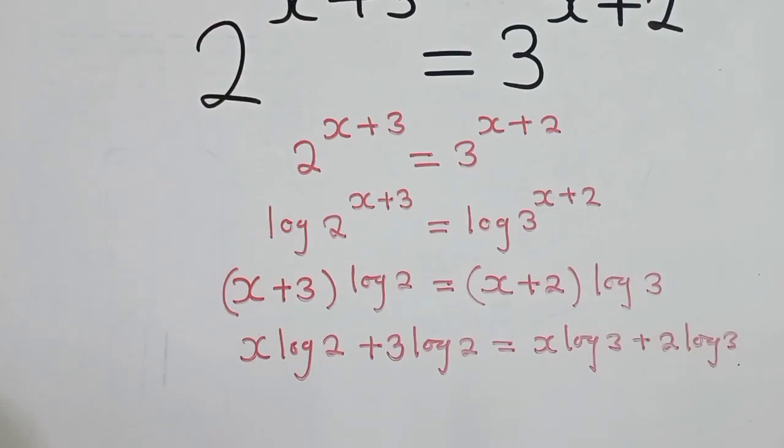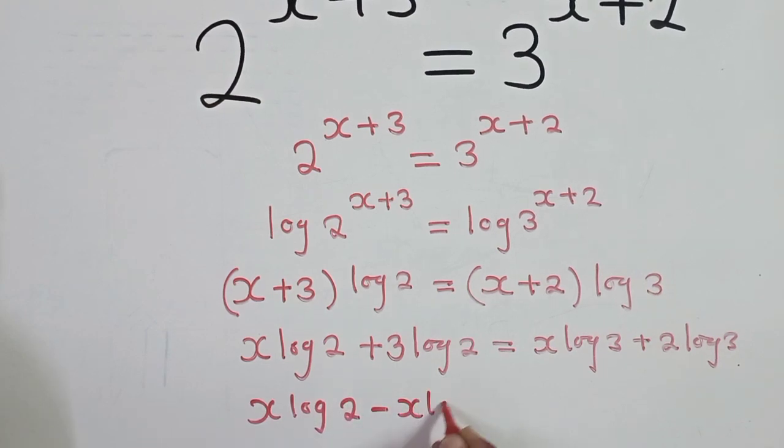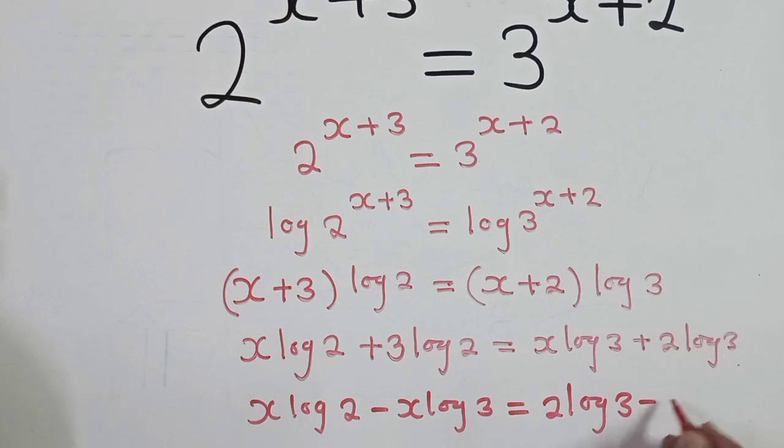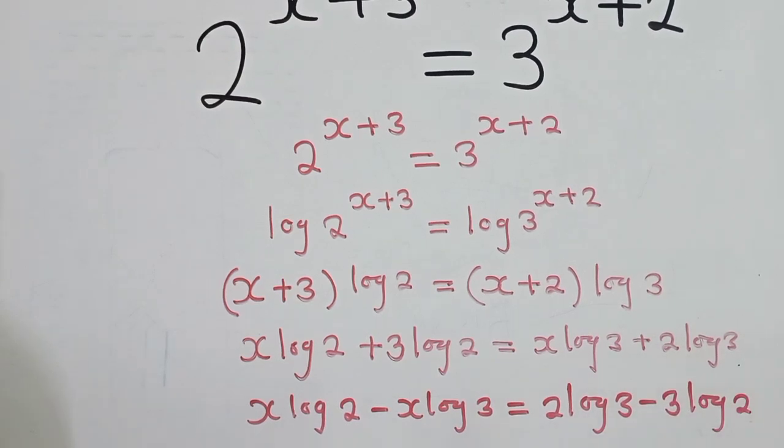So it will be x log 2 plus 3 log 2 is equal to x log 3 plus 2 log 3. I guess you understand what is happening here. Now from this stage, we can now group the like terms. So we shall have x log 2 minus x log 3.